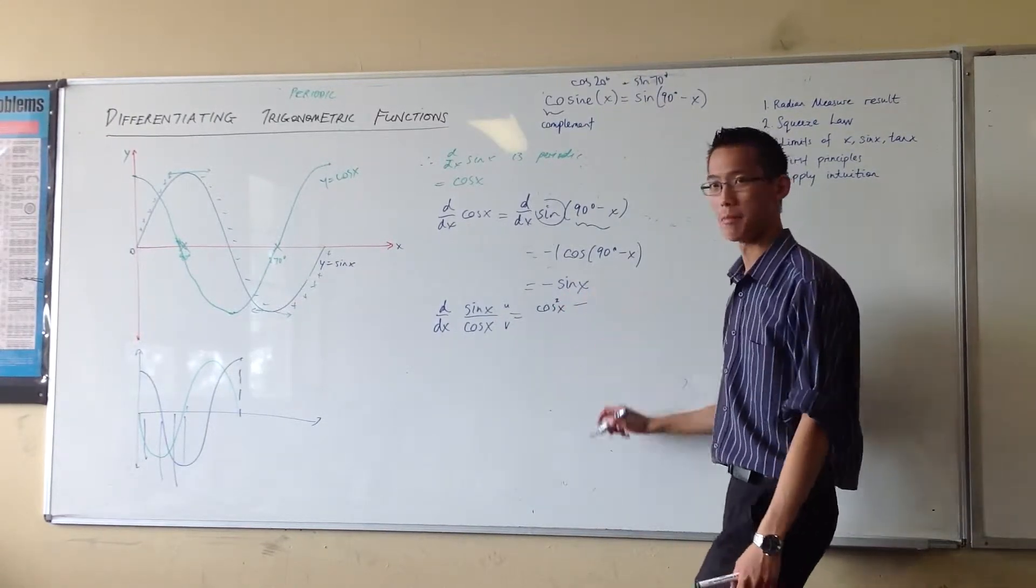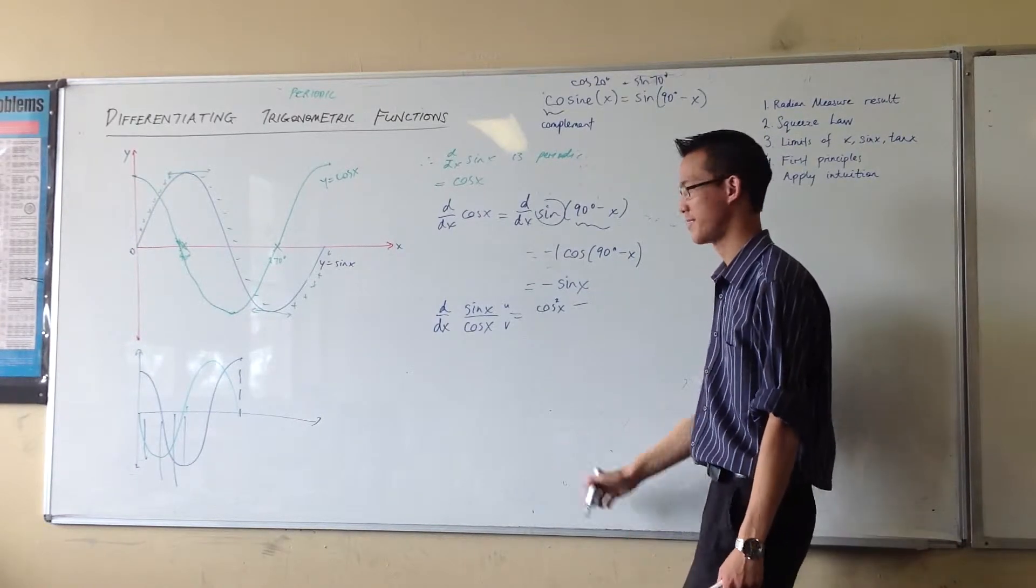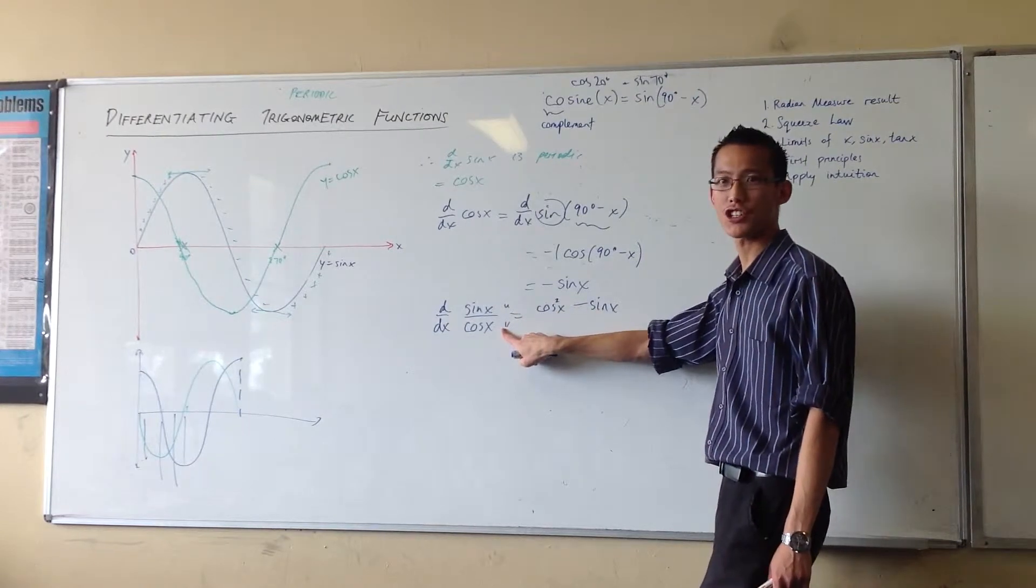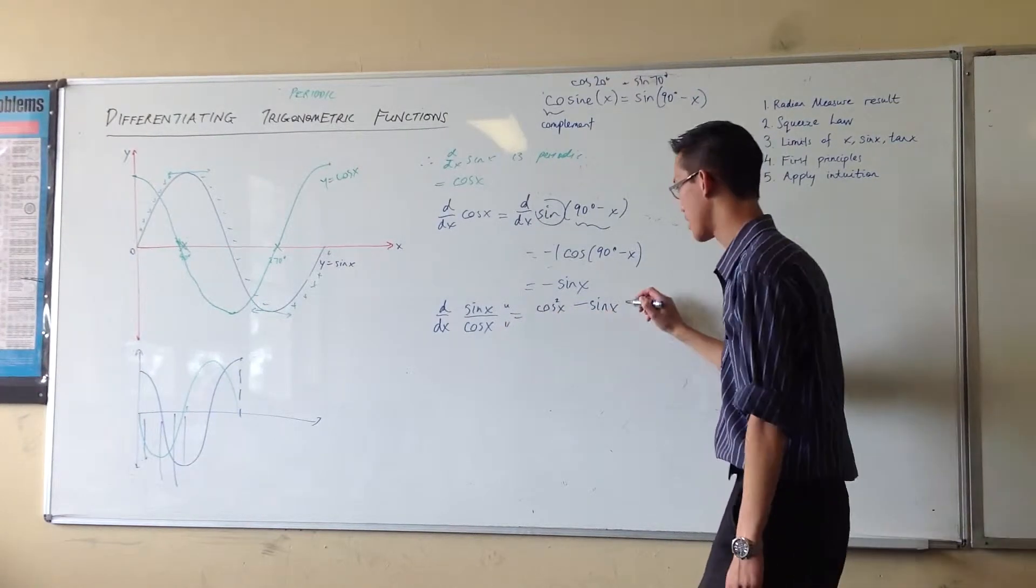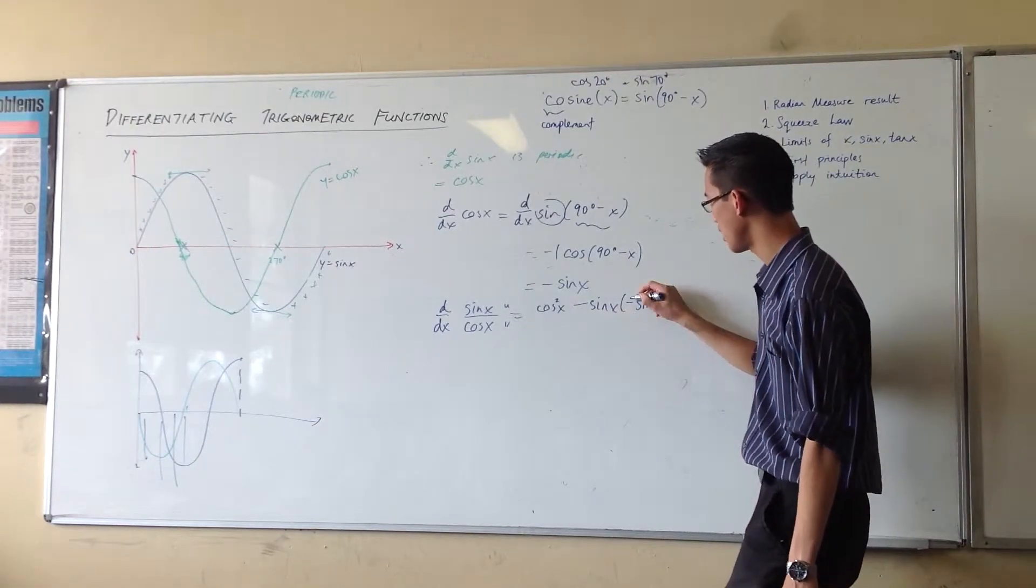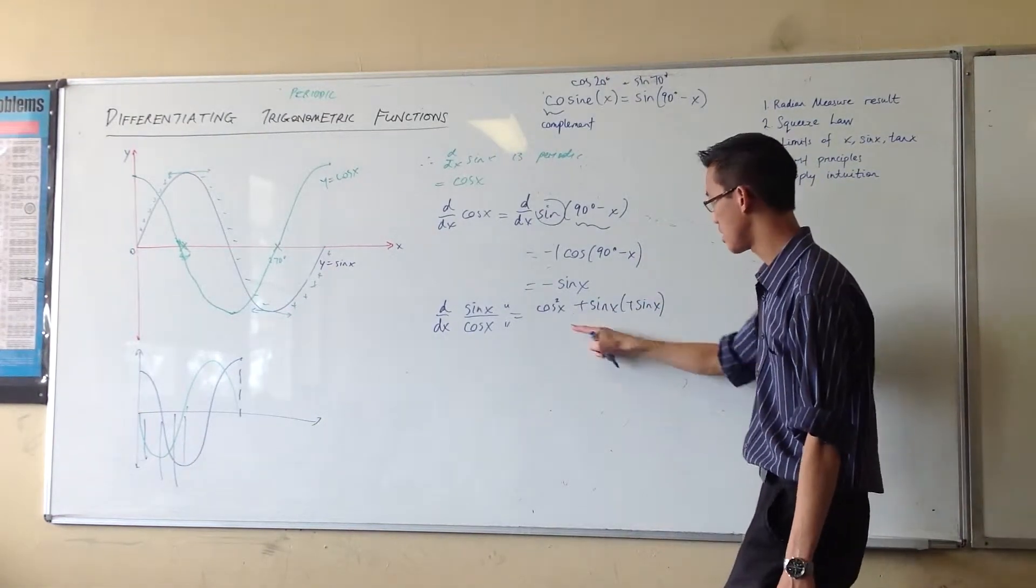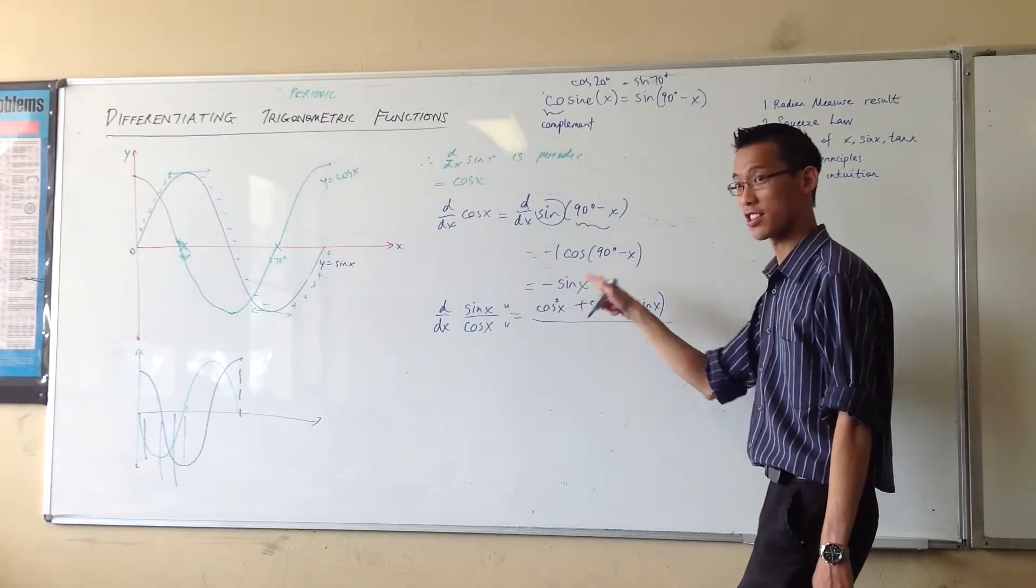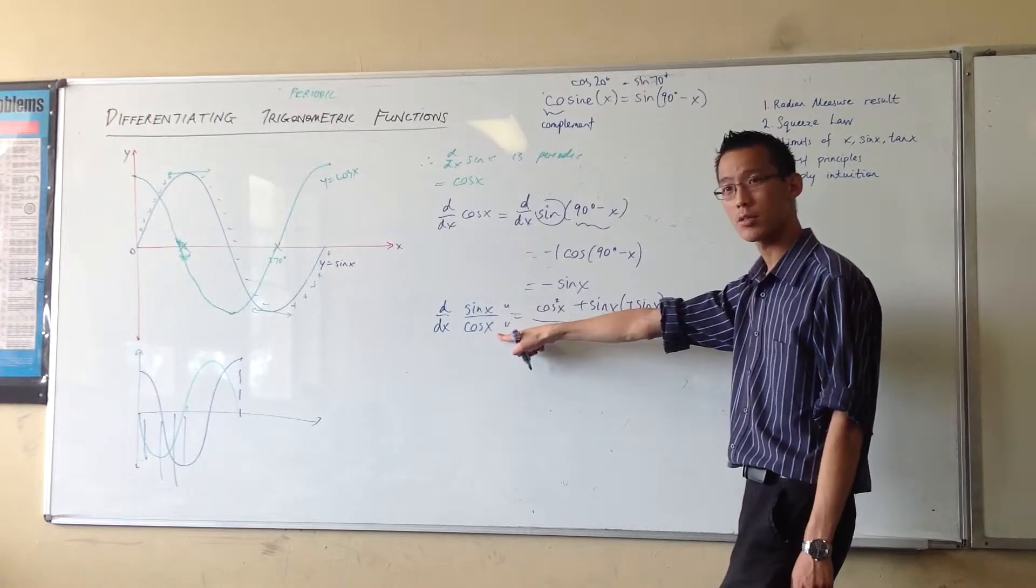Now the next part is minus, and then you do u times v dash. So u is sine x. There's v, so what's v dash? Minus sine x - we just established it. So I've got two negatives here, so they cancel. This is really cos squared plus sine squared on top. That's going to turn into an identity we know.